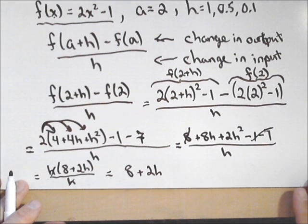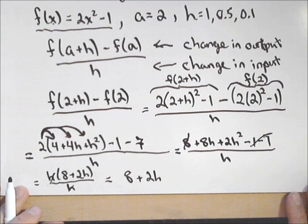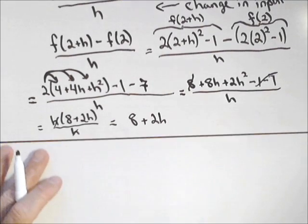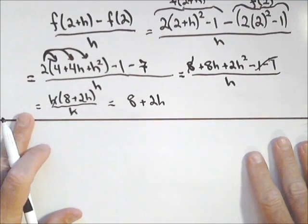Now, I can just plug in my values that I was given for h to get the average rate of change between 2 and the point that is h units away. So, we were asked to do it for 1, 0.5, and 0.1.